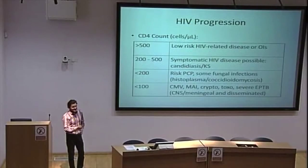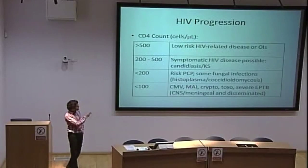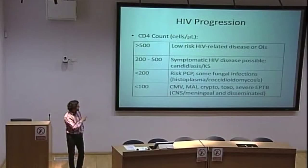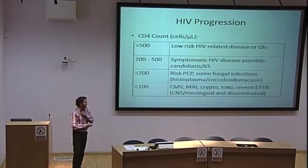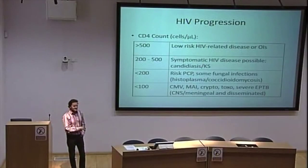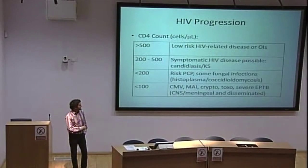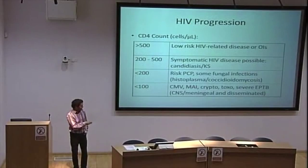Between 200 and 500 CD4, you're at risk of symptomatic HIV disease, low-level opportunistic infections such as oral candidiasis, esophageal candidiasis, and Kaposi's sarcoma. As you drop to under 200, that's where the main risk comes in: PCP and fungal infections like histoplasmosis. Under 100, probably under 50, you get CMV retinitis, MAC, cryptococcal disease, and toxoplasma. There's some evidence you get more severe forms of extrapulmonary TB at very low CD4. TB can affect any CD4 count, although it is an AIDS-defining illness — if you have TB at any stage with HIV, you have AIDS by WHO criteria.